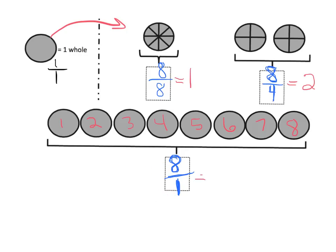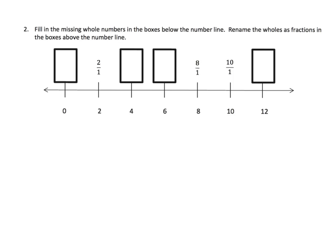In this one we're supposed to fill in the missing whole numbers in the boxes below the number line, and rename the wholes as fractions in the boxes above the number line. When you have two wholes that's two over one; when you have eight wholes that's eight over one; ten wholes is ten over one.